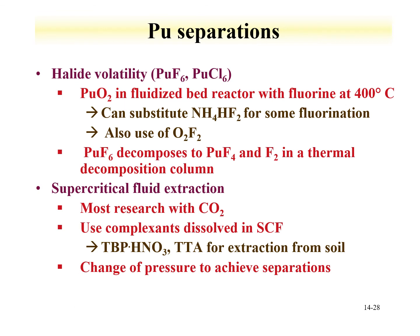Like uranium hexafluoride, plutonium hexafluoride is also volatile and can be used for plutonium-based separation. The plutonium dioxide is placed into a fluidized bed reactor with fluorine at 400°C. Other fluorinating agents such as ammonia bifluoride can also be used. The resulting hexafluoride species is volatilized. When it enters a thermal decomposition column, the plutonium hexafluoride reduces to the tetrafluoride — which is not volatile — with the formation of fluorine gas. This achieves a separation and recovery of the material.